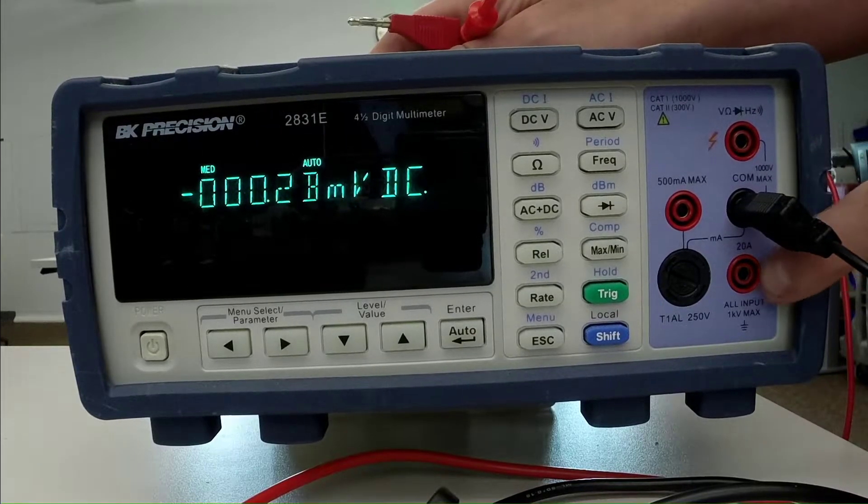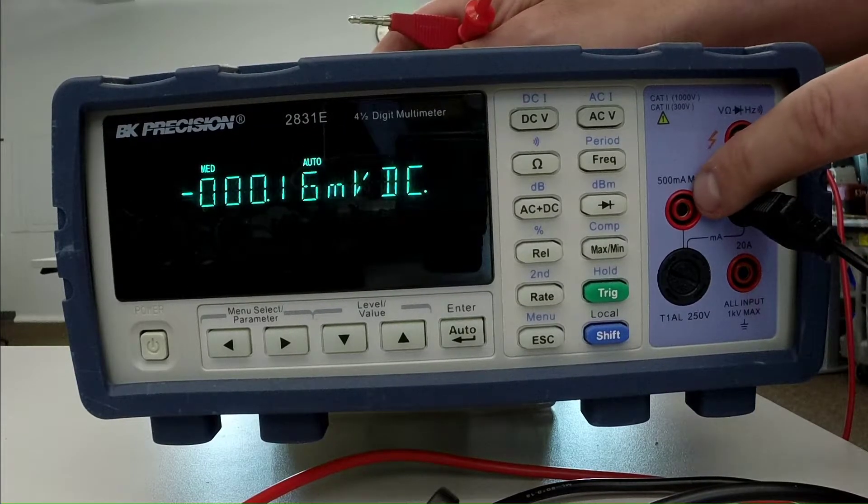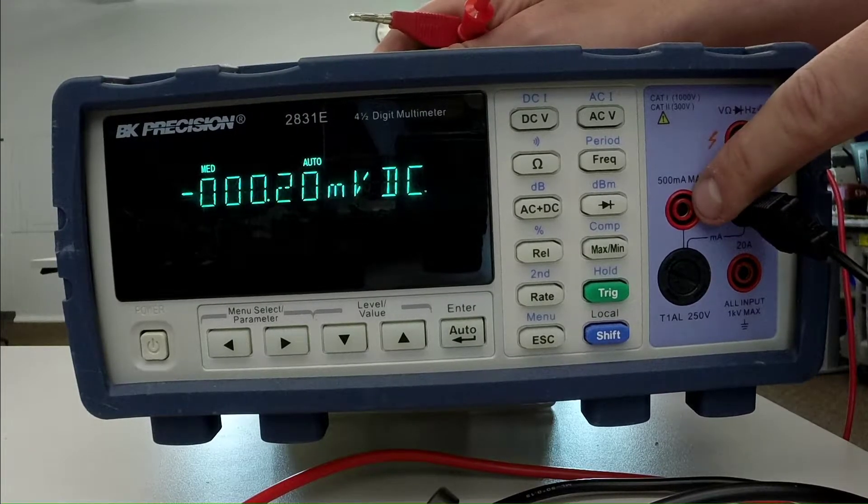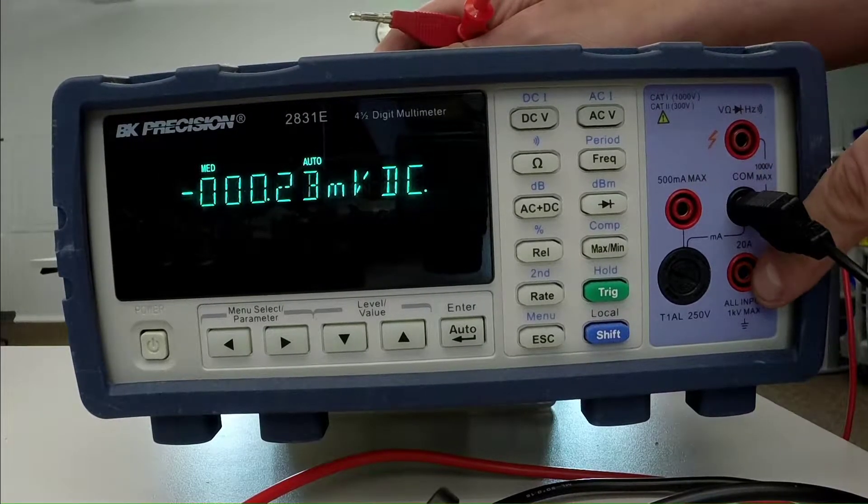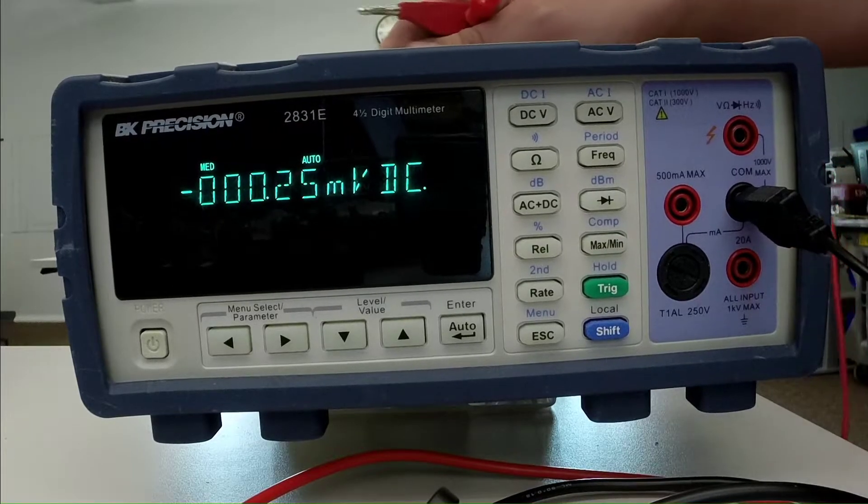If we're measuring current, there's two different terminals, depending on the range that we're using. So the small currents go through this guy, and if we need to measure a larger current, then we'd use this terminal down here.